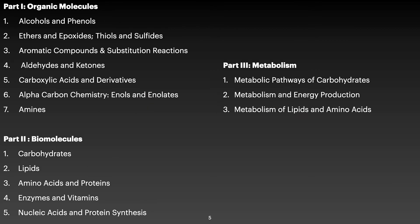The course has three parts: organic molecules, biomolecules, and metabolism. Organic molecules is where we apply principles learned in Organic Chemistry 1. The most common compounds we cover are alcohols and phenols, ethers, epoxides, thiols and sulfides, and aromatic compounds — aromatic compounds being benzene or anything with a conjugated ring structure.